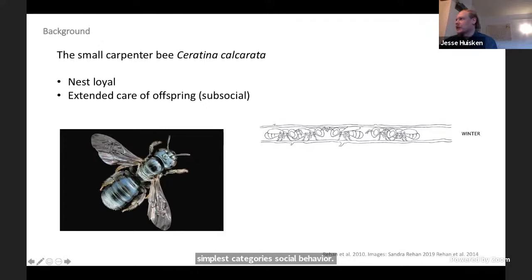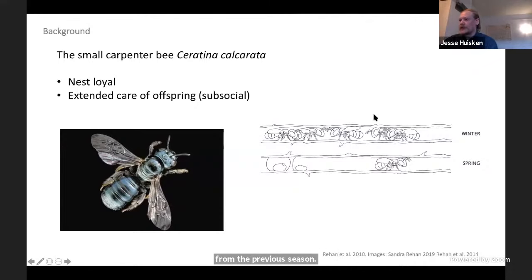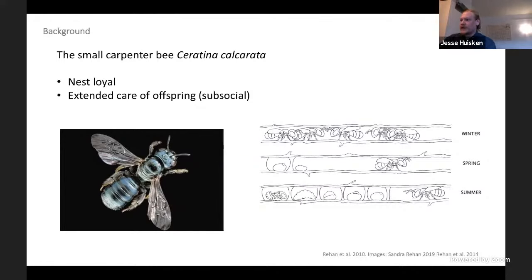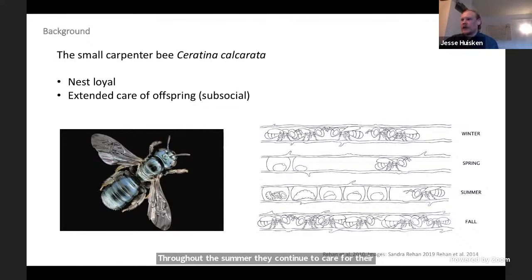Their life cycle begins with overwintering adults from the previous year. They emerge in the spring to construct their own nests and begin provisioning their brood cells. Throughout the summer they continue to care for their offspring by cleaning brood cells. And then in the late summer and fall they engage in a second period of foraging where they actually feed adult offspring within the nests.